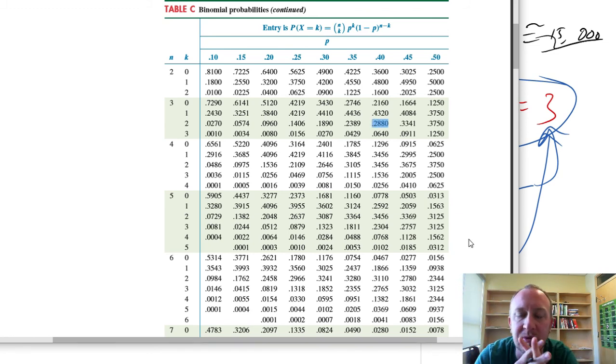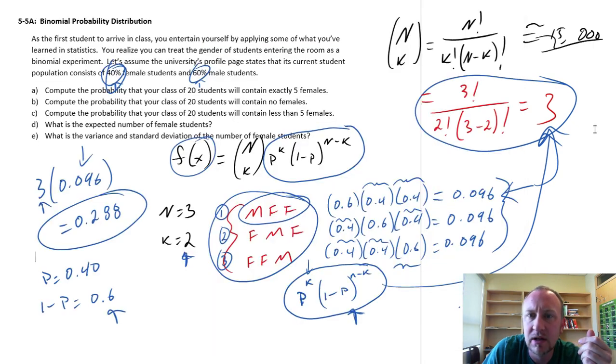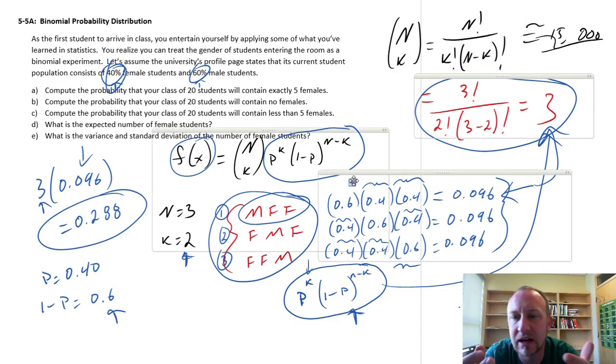And two successes, I'm going to come over here and wouldn't you know it, there's the probability that we just calculated, 0.288. So that's when we have three trials, I'm looking at the probability of two successes, two females out of three students who enter the room when the probability associated with one female entering the room is 0.4.